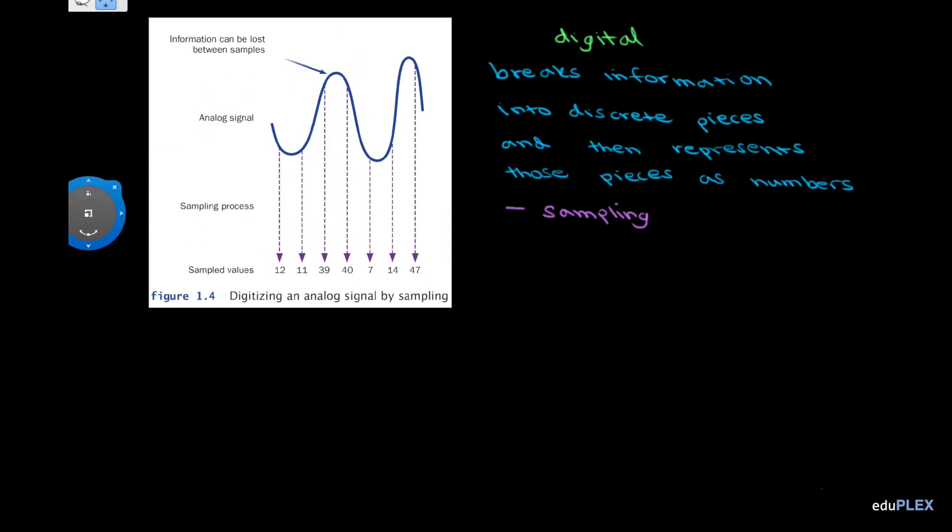In this diagram, for example, we're taking samples of this analog signal at a specific interval, so maybe we'll take it at all these points, and then we take these sampled values, and these are the numbers that we're storing as digital.